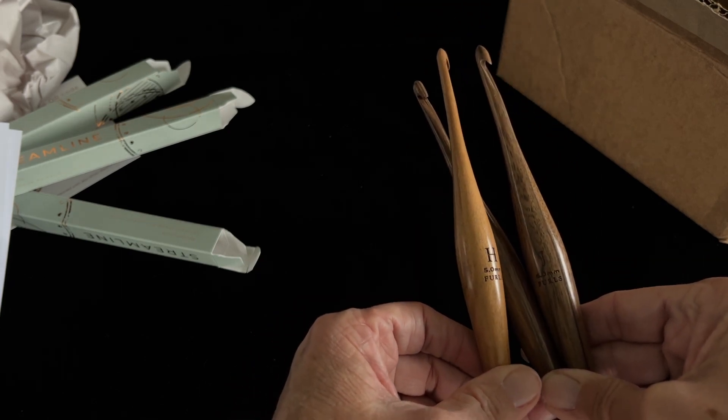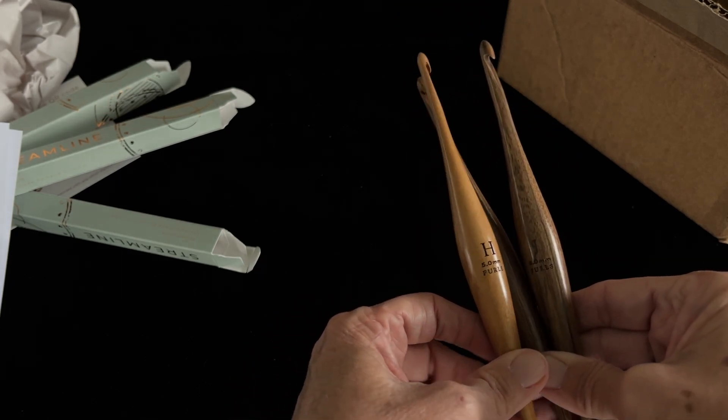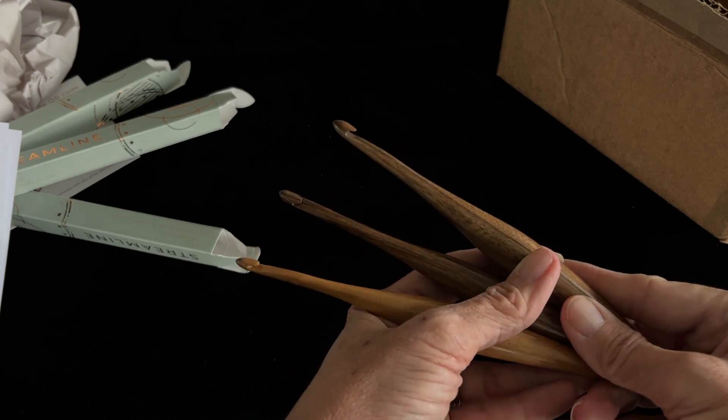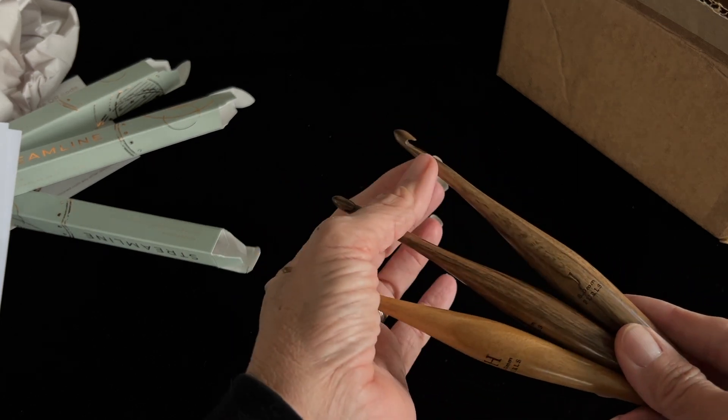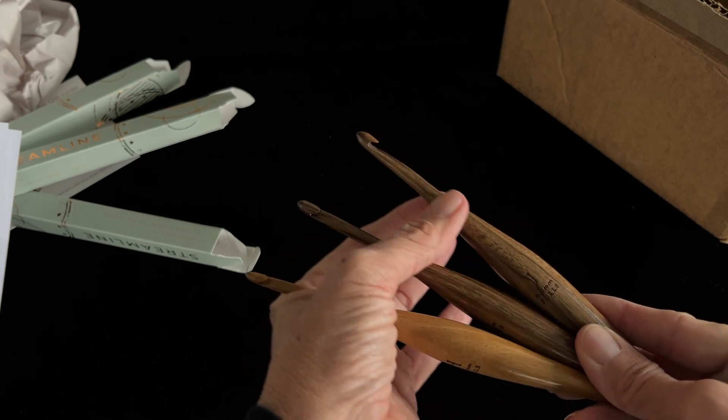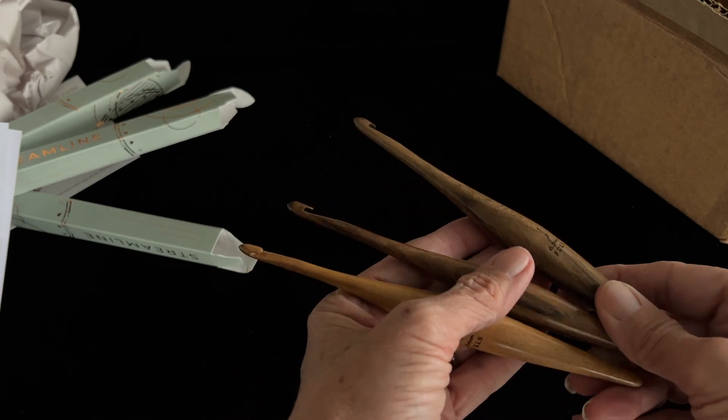So I do have odysseys and I do have some of the resin hooks and I do like them. For amigurumi, I do prefer more of the flat shaft, you know, the same size shaft without the increasing in size.